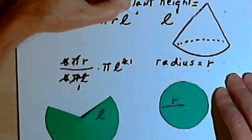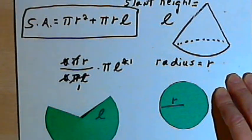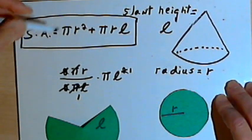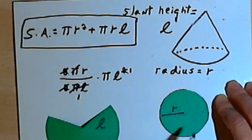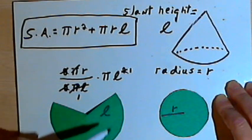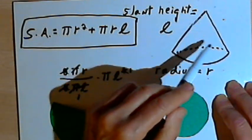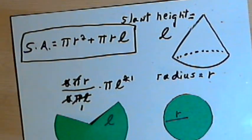So now I've got a general formula for the surface area of a cone. It's going to be pi r squared, which is the area of the base, plus pi r L, which is the area of the sector that makes up the side of the cone. So let's take that formula and apply it to a couple of problems.